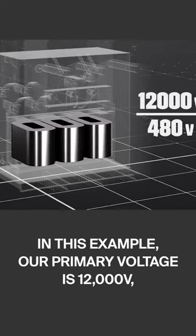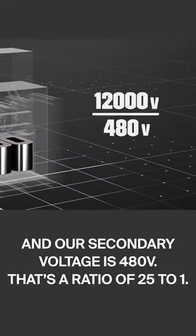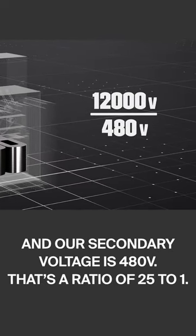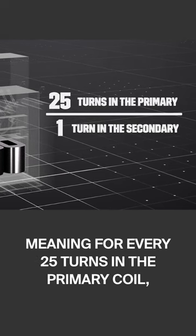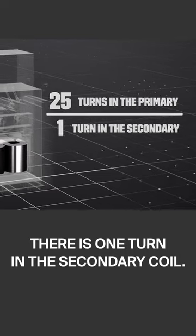In this example, our primary voltage is 12,000 volts and our secondary voltage is 480 volts. That's a ratio of 25 to 1, meaning for every 25 turns in the primary coil there's one turn in the secondary coil.